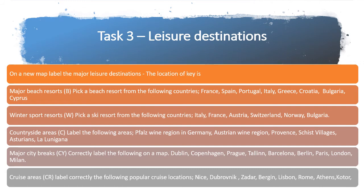I've given you the examples of what I want you to do. The major beach resort areas in Europe include France, Spain, Portugal, Italy, Greece, Croatia, Bulgaria, and Cyprus — just pick a seaside resort in each of those countries and locate where it is. For ski resorts, those are the major ones: find a ski resort in Italy, France, Austria, Switzerland, Norway, and Bulgaria, and place it correctly on the map.